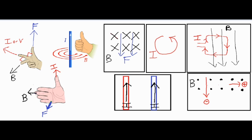Let's start with the right grip rule. You want to use this one when you have some current running along a wire or some current running around in a loop. For example, if you had a wire with a current going around counterclockwise, your fingertips curl around in the direction of the current, so your right hand curls around this way.